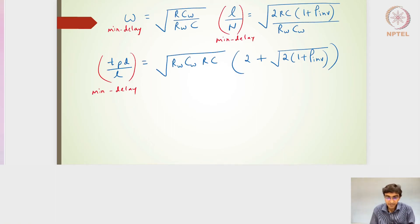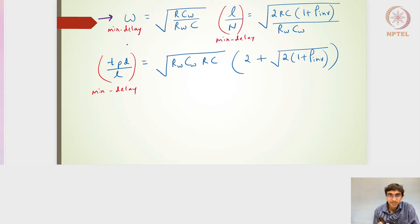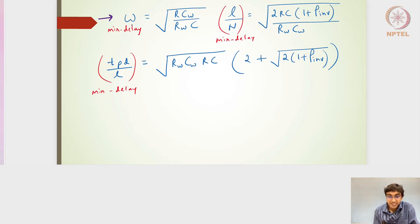Moving on from the previous sections, the optimum W gives the minimum delay. This optimum W is the scaling factor for the repeaters — it has nothing to do with the length of the wire, only the width of the repeater. We had used an inverter in the form of a repeater, so the scaling factor of the inverter has to be optimized to get the overall delay of the wire along with the repeater to be minimum.